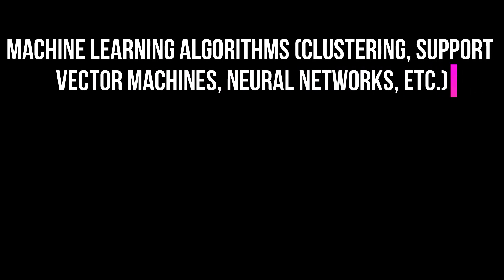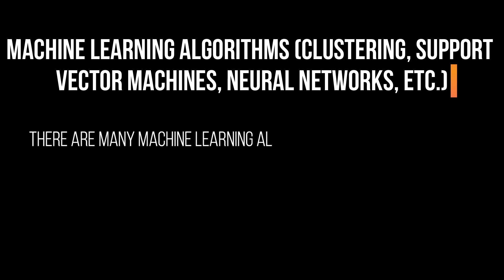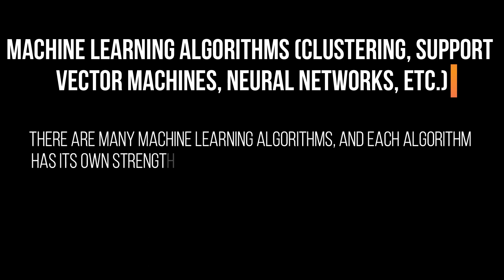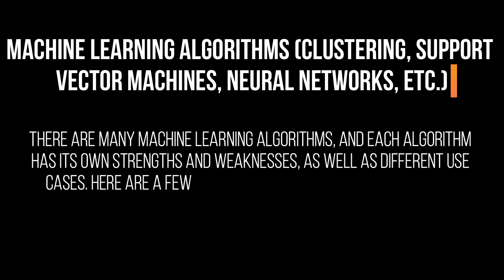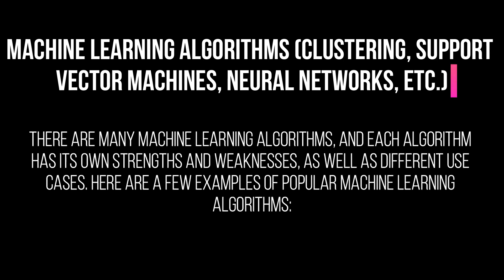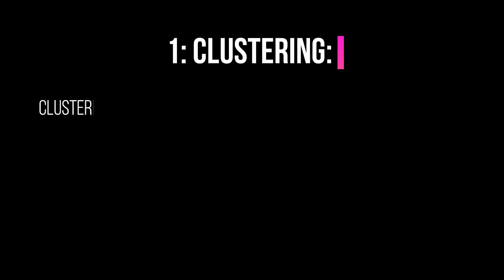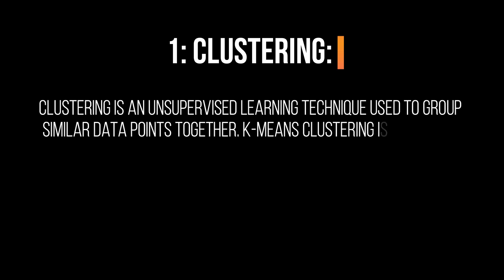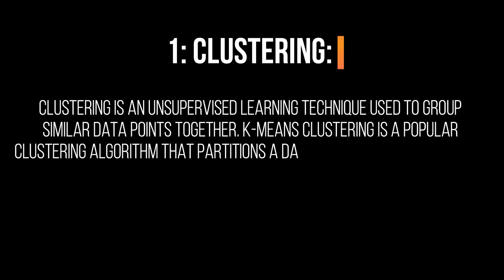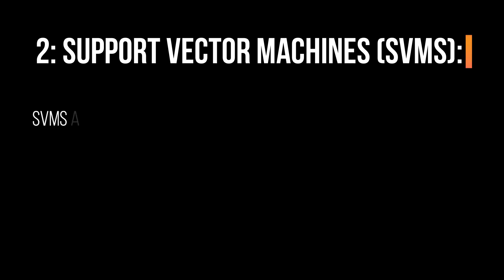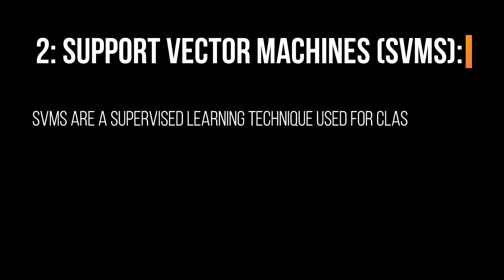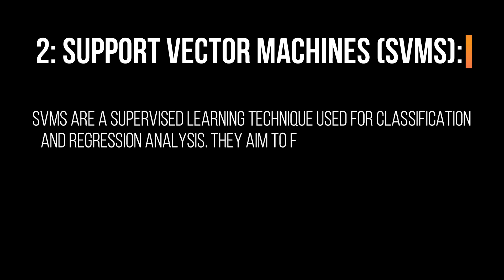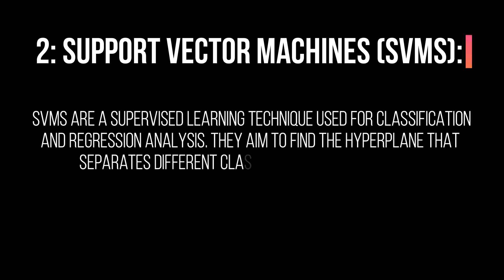Machine learning algorithms include clustering, support vector machines, neural networks, and more. There are many machine learning algorithms, and each algorithm has its own strengths and weaknesses, as well as different use cases. 1. Clustering: Clustering is an unsupervised learning technique used to group similar data points together. K-means clustering is a popular clustering algorithm that partitions a dataset into K clusters based on their similarity. 2. Support Vector Machines (SVMs): SVMs are a supervised learning technique used for classification and regression analysis. They aim to find the hyperplane that separates different classes with maximum margin.